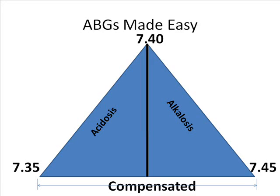So if you take a look here at this little triangle, you have on the left hand side 7.35 — anything less than that is uncompensated acidosis. Anything greater than 7.45 on your pH is uncompensated alkalosis.